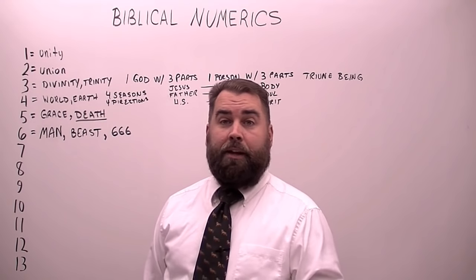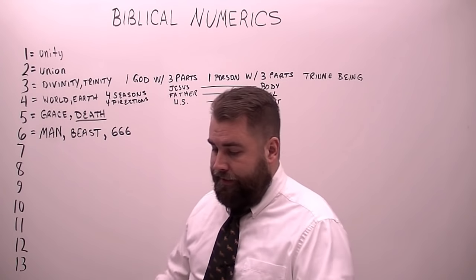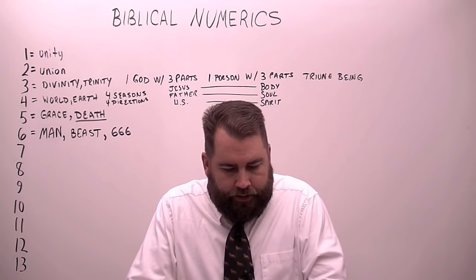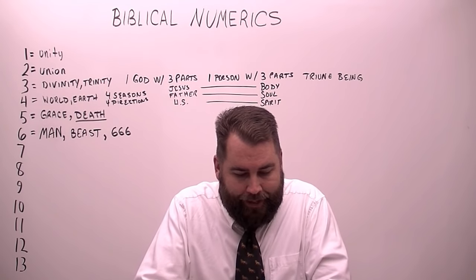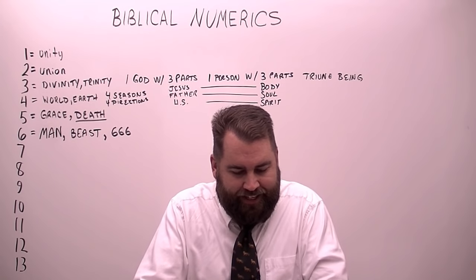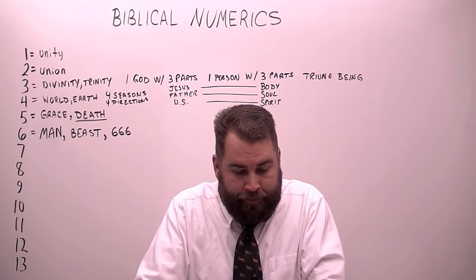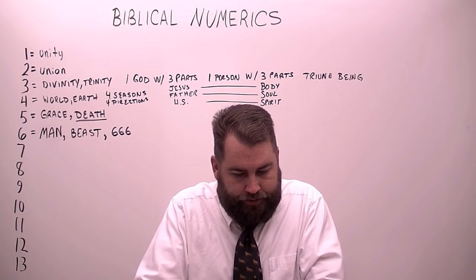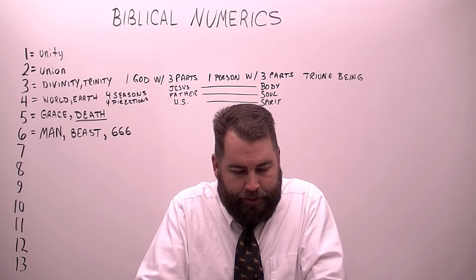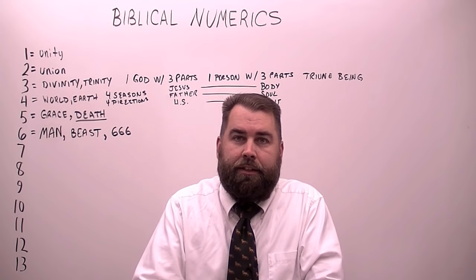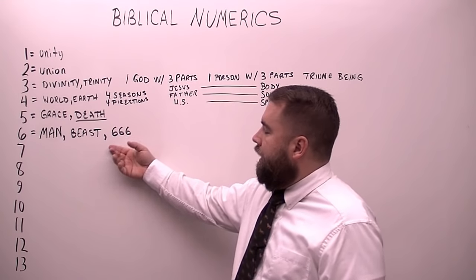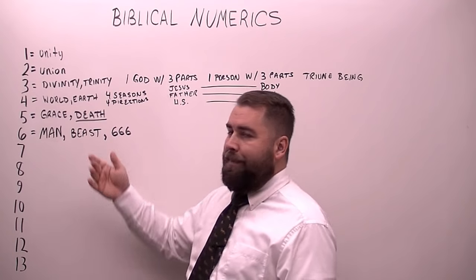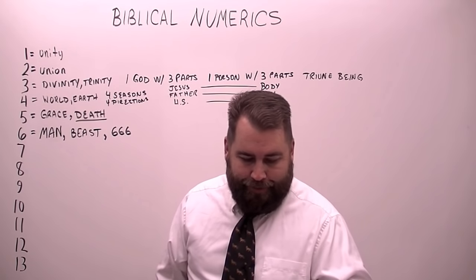It'd be fun if you emailed some examples of what you find that shows this as well in different verses. Number six is the number of man, but also the number of the beast. It's interesting in the Bible — Nebuchadnezzar built an image that was 60 by 6 by 6, which is a lot of sixes. He wanted all people to worship it, and it was also a type of the beast, the antichrist. So many different numbers in the Bible.